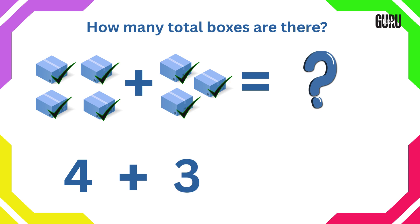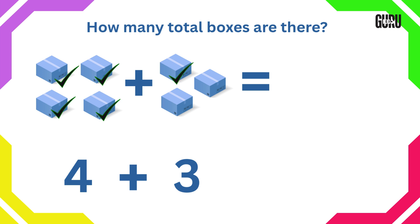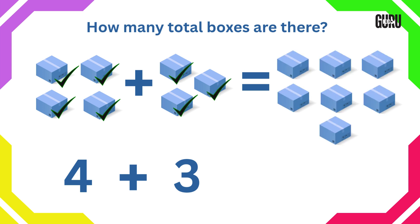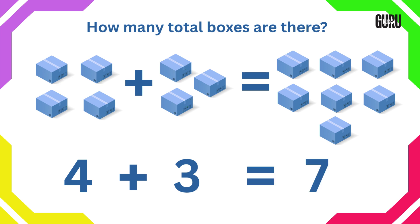Now let's count all together. Count after 4: 5, 6, 7. So total 7 boxes. Therefore, 4 add 3 is 7.